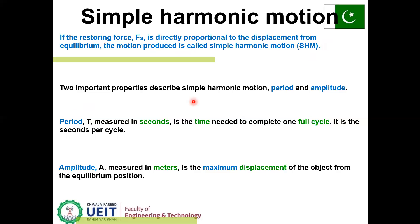Two important properties describe simple harmonic motion: period and amplitude. Period T, measured in seconds, is the time needed to complete one full cycle — it is seconds per cycle. Amplitude A, measured in meters, is the maximum displacement of the object from the equilibrium position.